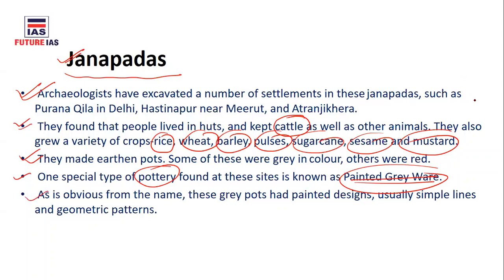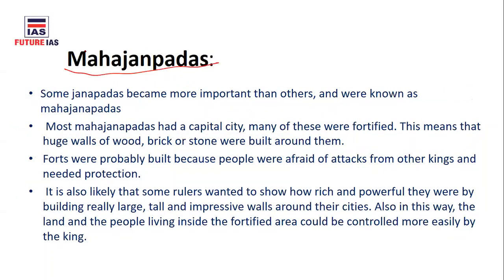So the general characteristics of people who lived in Janapadas are: they reared animals, cultivated crops, used colored earthen pots including Painted Greyware pottery. Now let's understand Mahajanapadas. Some Janapadas became more prominent and important than others. 'Maha' means great, so Mahajanapadas were those Janapadas which became more prominent, well-known for particular things, and are called Mahajanapadas.